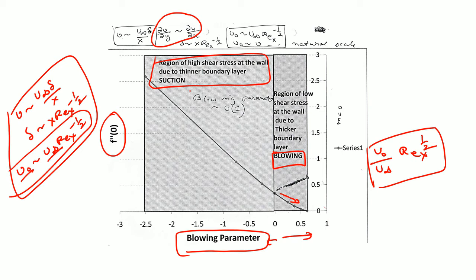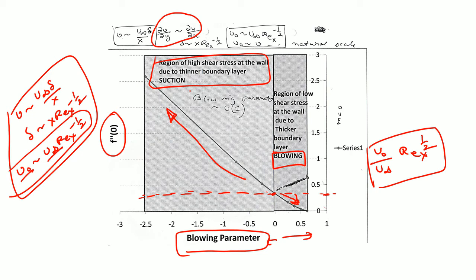As you increase blowing the boundary layer is blown outward, so there is a sharp decay in the shear stress. The middle point — blowing parameter equal to zero — corresponds to an impervious flat plate. With suction, the boundary layer becomes thinner and shear is sharply enhanced — increasing from about 0.3 all the way to about 2.7, roughly a one-order-of-magnitude increase in shear stress. High suction means high wall shear.